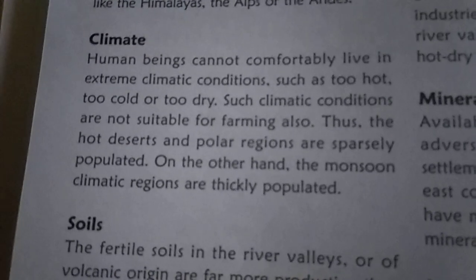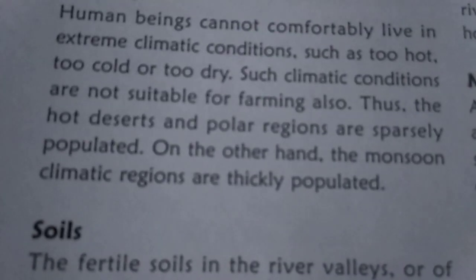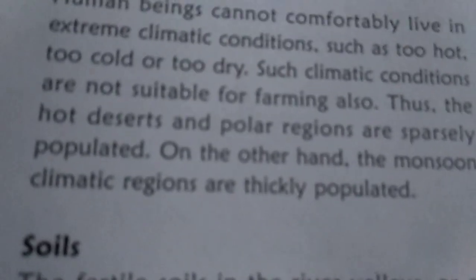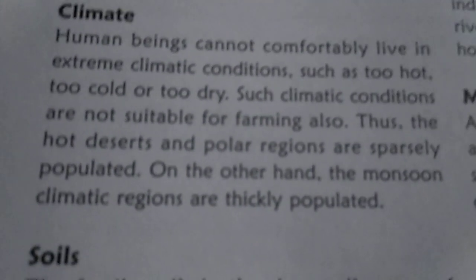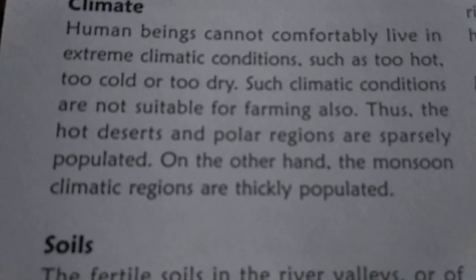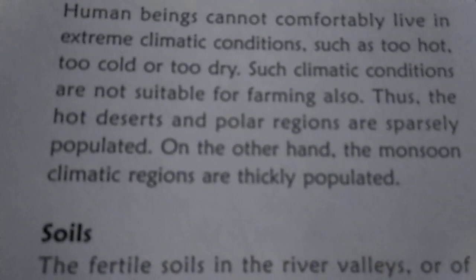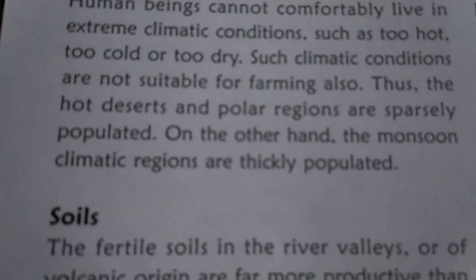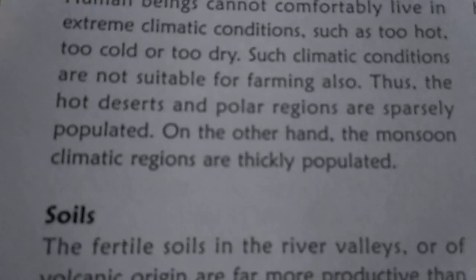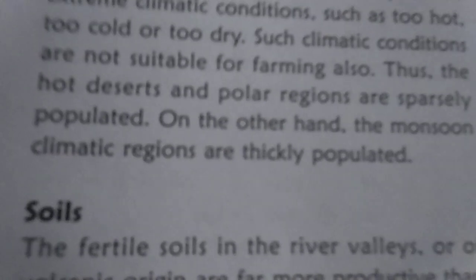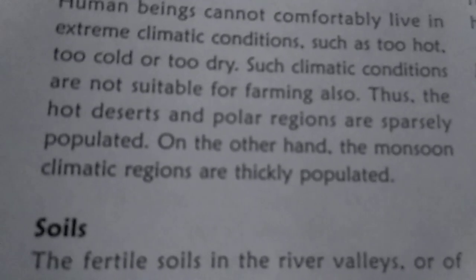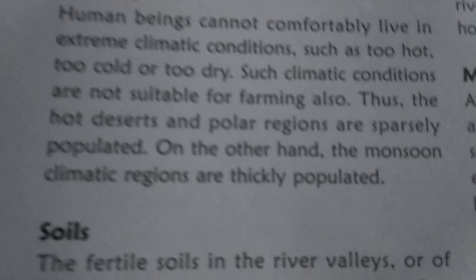Coming to climate: people will be able to live in a certain climate which suits them. If it is too hot or too cold, it will not be easy for their living and also not suitable for farming. That's why people do not prefer living in those areas, and they settle down in areas like the Gangetic Plains and Plateaus, where the monsoon climate helps them in agriculture and meets their living requirements.